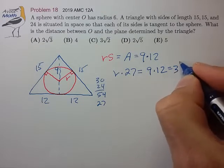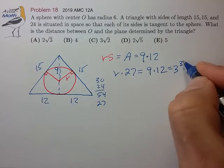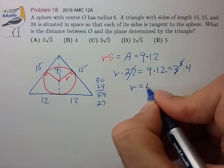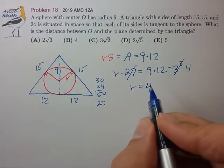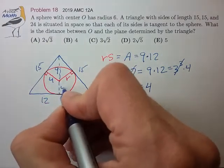That's 3 cubed times 4. That drops out. We know the radius is in fact 4. Okay, that's a big deal. So we have that this radius is 4.